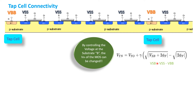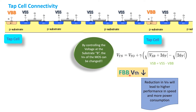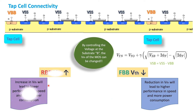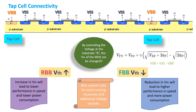Based on the source-substrate voltage, the VTH value will change. In the forward body bias condition, where VTH is reduced, it will result in higher performance and speed but more power consumption. Similarly, in the reverse body bias condition, VTH is higher, which results in lower performance and lower power consumption. Appropriately, VBB and VSS are chosen to suit the operating requirement.